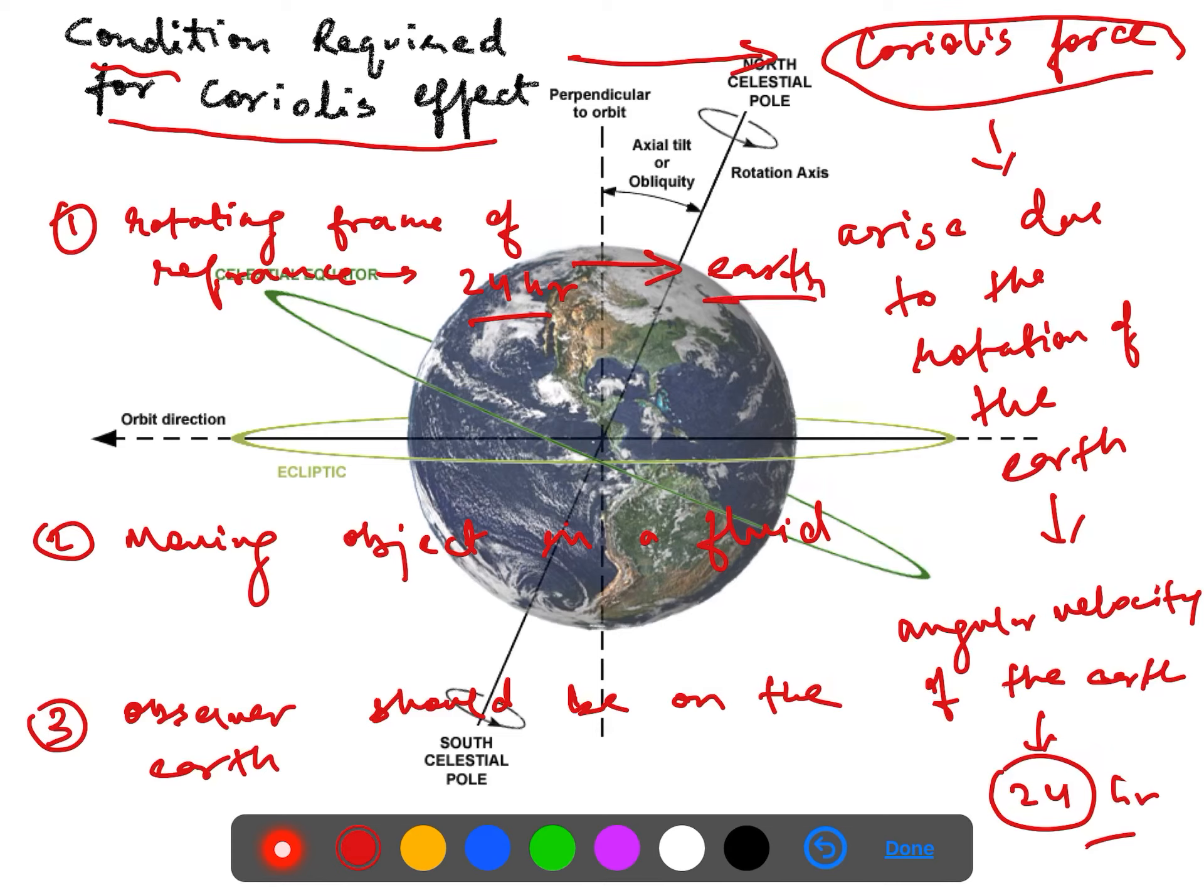This condition is automatically fulfilled with the angular velocity of around 7.24 into 10 to the power of minus 5 meter per second, or radians. Moving object in a fluid system, what is a fluid system here? Anything which is moving either in the air or in the water system. And observer should be on the earth.